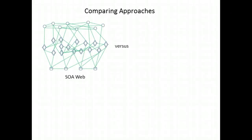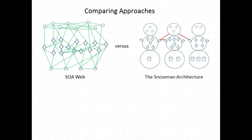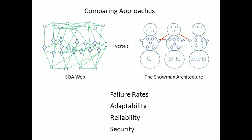We have two very different approaches to creating an IT architecture: the traditional SOA web architecture, and the snowman architecture. To determine which is best, we compare them on four key attributes: failure rates, adaptability, reliability, and security. If one of these two architectural approaches consistently delivers better on these attributes, or whatever attributes you've identified as critical for your organization, then I suggest you consider adopting that particular approach.